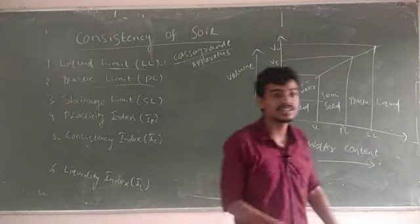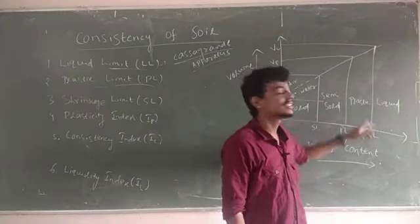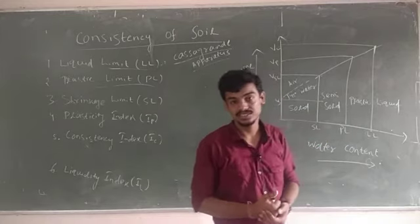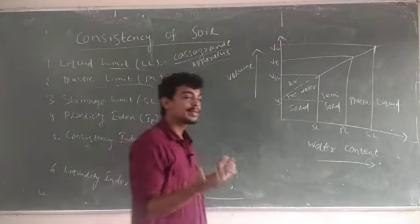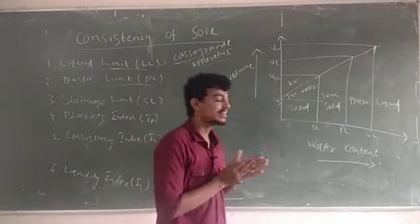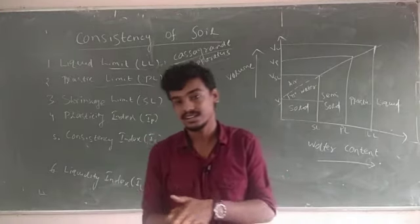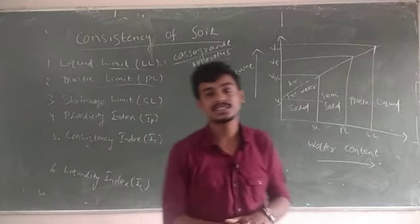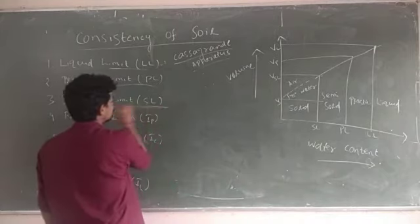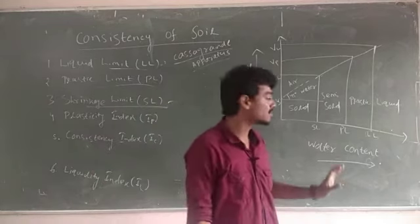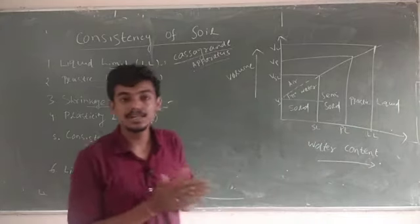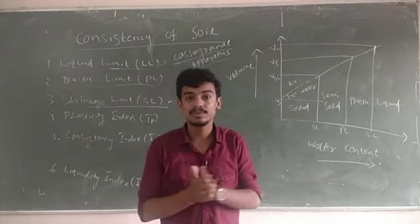Now coming to plastic limit: it is the minimum water content at which the soil changes from semi-solid state to plastic state. If you remember this graph you can easily find out the definition. For experimental purposes, plastic limit is found by rolling the soil into a 3 mm diameter thread; when a crack appears, that is the plastic limit.